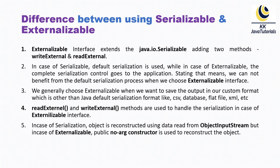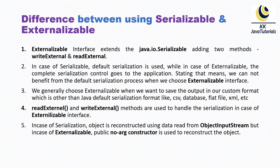Last but not least: in the case of Serializable, the object is reconstructed using data read from the ObjectInputStream. But in the case of Externalizable, a public no-argument constructor is used to reconstruct the object. So with Serializable, you serialize using ObjectOutputStream and deserialize using ObjectInputStream, whereas with Externalizable, the no-argument constructor is used to reconstruct or deserialize the object.